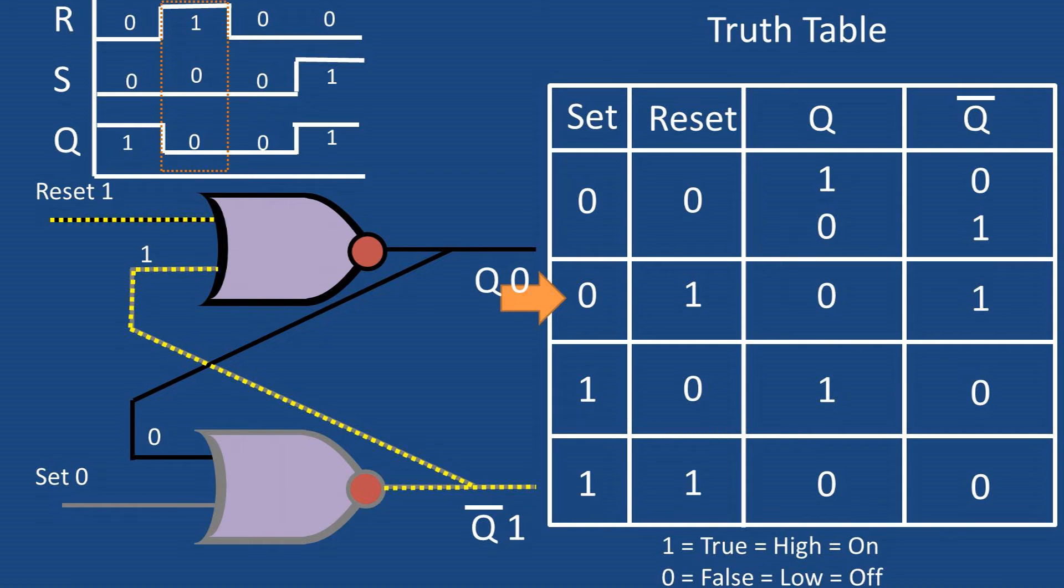Now let's see what happens when we stop sending the reset value of one. The Q value remains at an off or zero state. This will happen indefinitely until there is a set signal of one sent to the system.